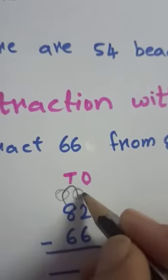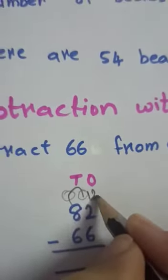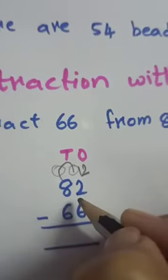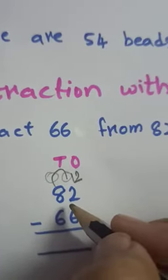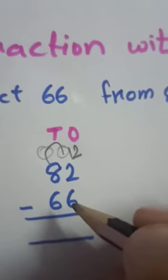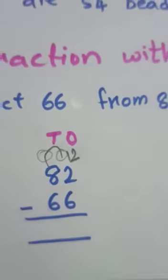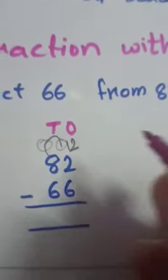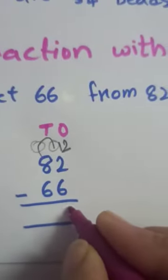So, this 2 is becoming 12. Subtract 6 from 12. Now, you can easily subtract 6 from 12. So, what we will get? 12 minus 6 is 6.